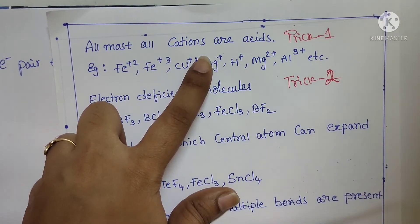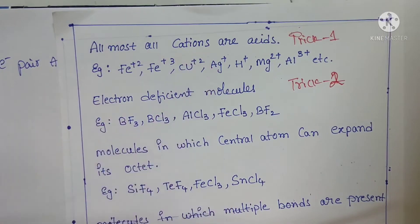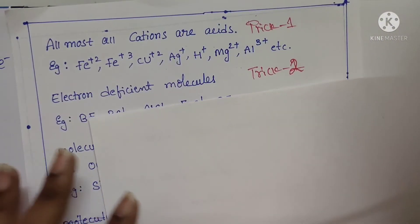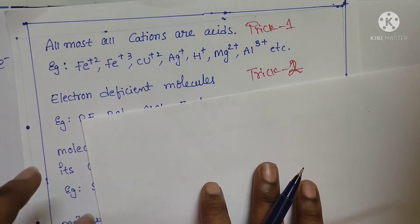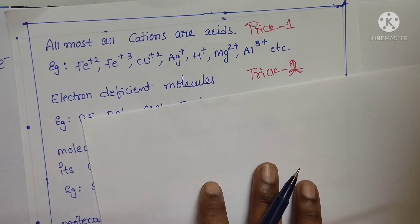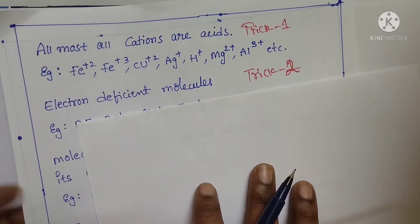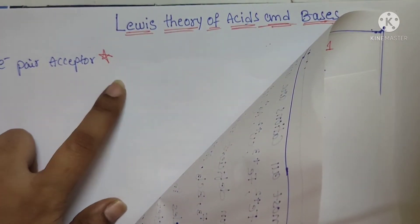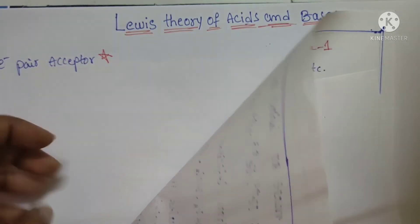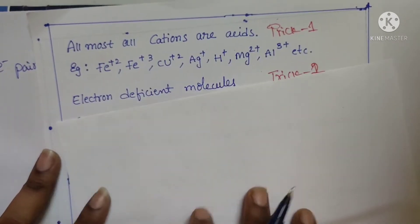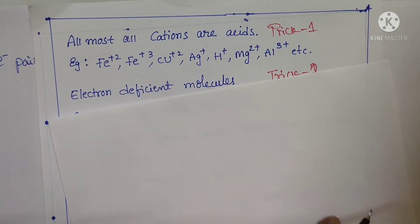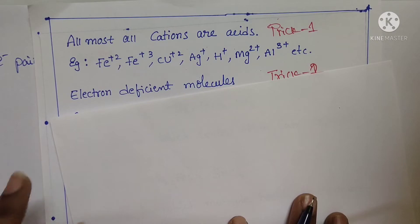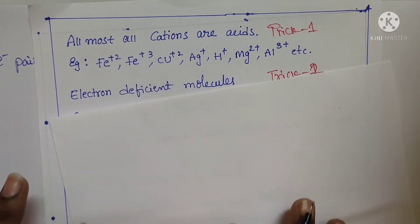Now we will see almost all cations act as Lewis acids — almost all, not all. Why not all cations? Because to act as a Lewis acid, a cation should have a vacant orbital, meaning an empty orbital. If there is no empty orbital, it cannot accept an electron pair, so it cannot be a Lewis acid. That is why only some cations act as Lewis acids.